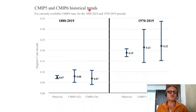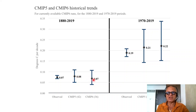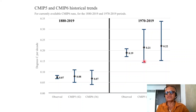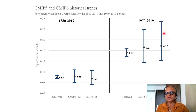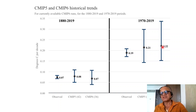Looking at CMIP-5 and CMIP-6 historical trends: from 1880 to 2019, the observed warming trend was 0.07°C per decade, and CMIP-5 and CMIP-6 had medians of 0.08 and 0.07 respectively. For 1970 to 2019, where warming accelerated, the observed warming was almost double at 0.19°C per decade. The modeled range in CMIP-5 had a median of 0.21 and the CMIP-6 range is larger with a median of 0.22.